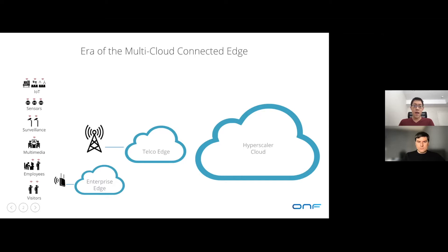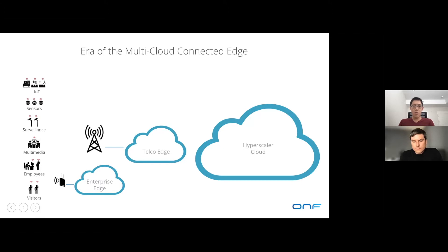Another industry trend is that 5G is now becoming the last mile link to the end device. The challenge we've been facing is the ability to connect this explosion in the number of devices on the left-hand side to the various cloud resources on the right. There are different forms of compute and networking resources of different sizes inside each of these clouds, but there are lots of common requirements and challenges across these data centers.